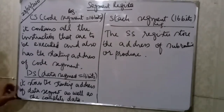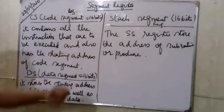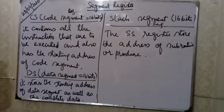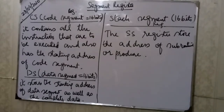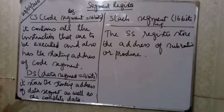Now let's look at the segment registers. These are again 16-bit registers. The stack segment register stores the address for the stack's subroutines and procedures. The data segment register stores data addresses. The three main segments are: code segment, data segment, and stack segment.